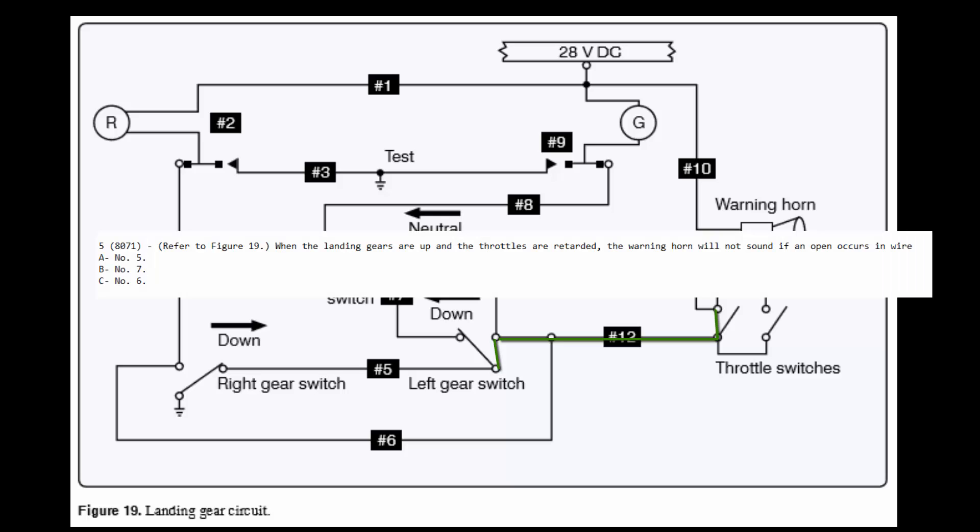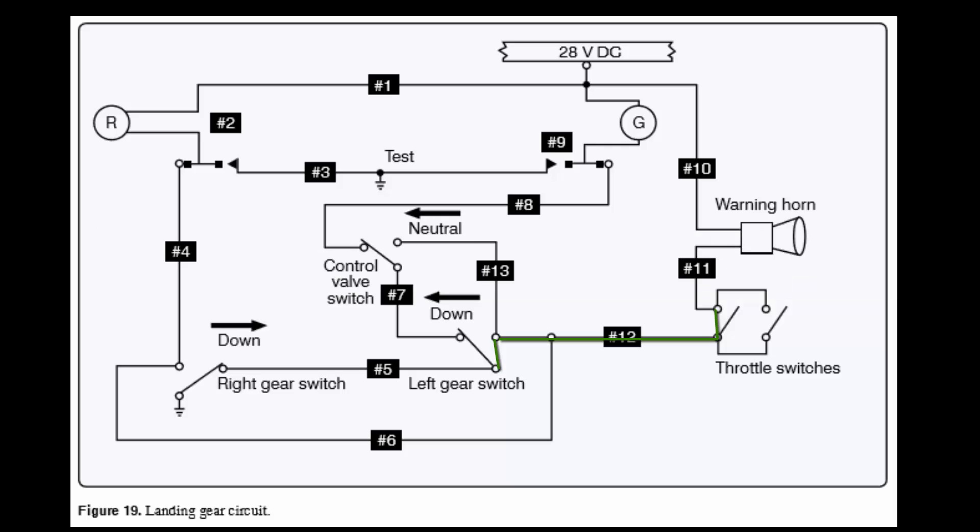One more question. It wouldn't be any good if they didn't mix it up for us. With the landing gears up and the throttles retarded, the warning horn will not sound if an open occurs in what wire? In wire 5, 7, or 6. Okay, so same thing. Got power to the warning horn, seeking a ground through 11, through the throttle switches, down to 12.